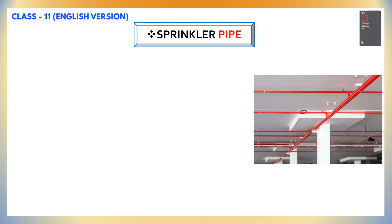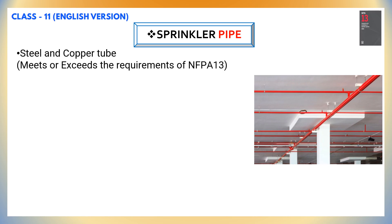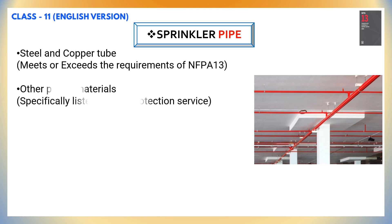Let's begin our class with the first system component: sprinkler piping used in the fire protection industry. As you can see on your screen, steel pipes and copper tubes can be used as sprinkler piping in line with the requirements of NFPA 13. Other piping materials can also be used; however, they have to be specifically listed for fire protection service.